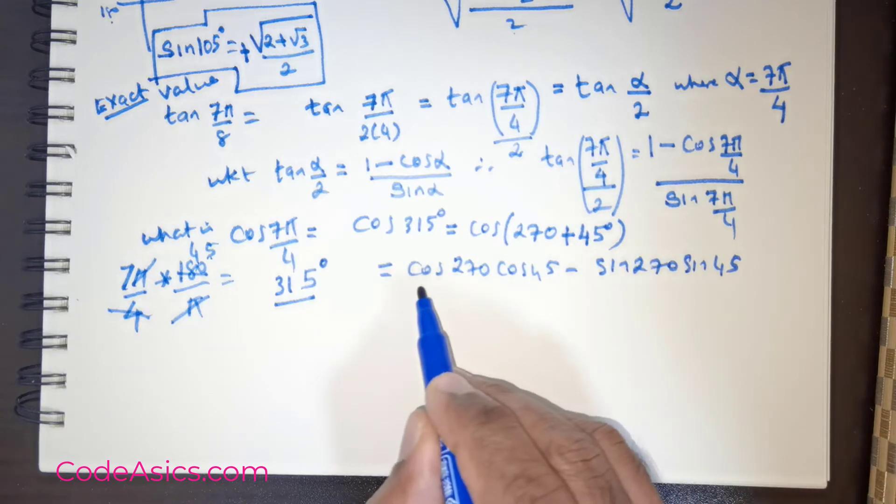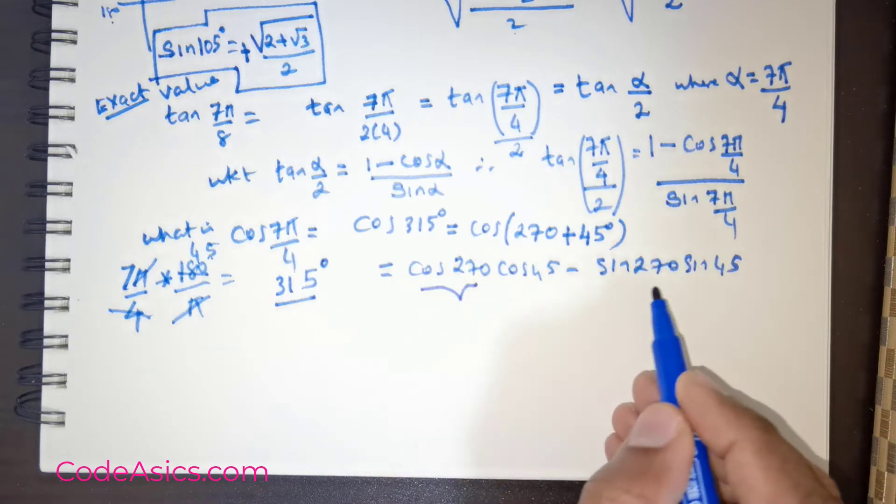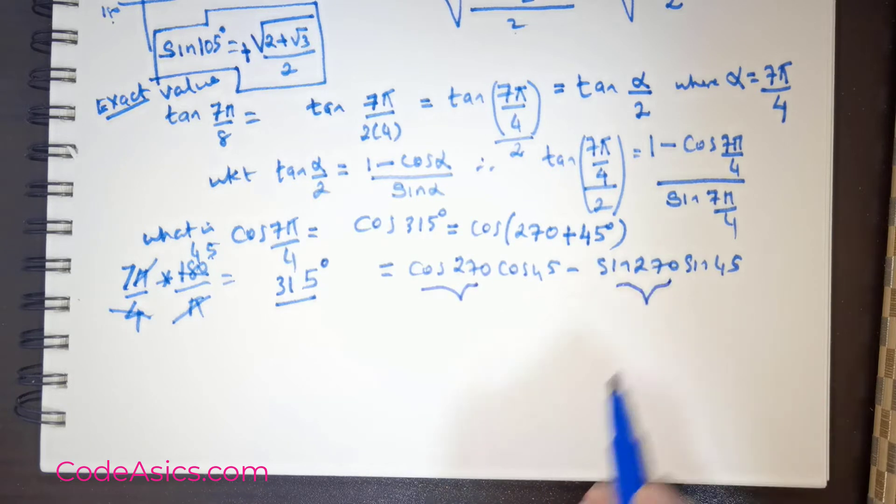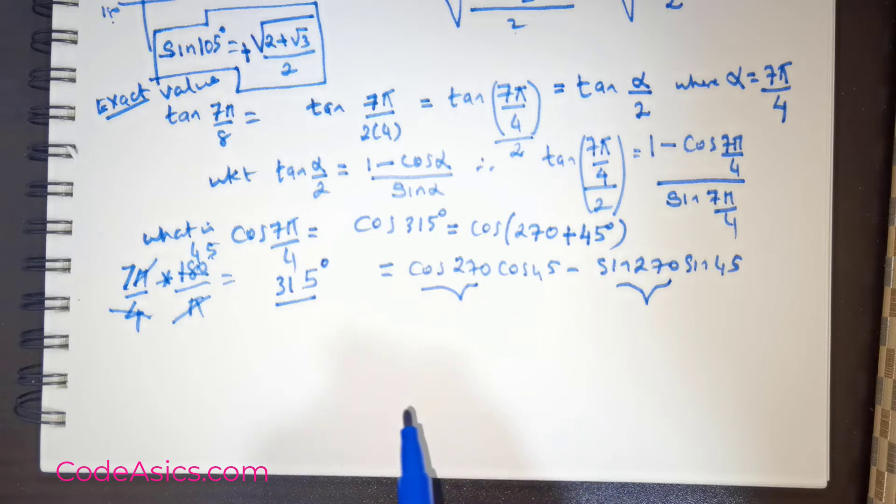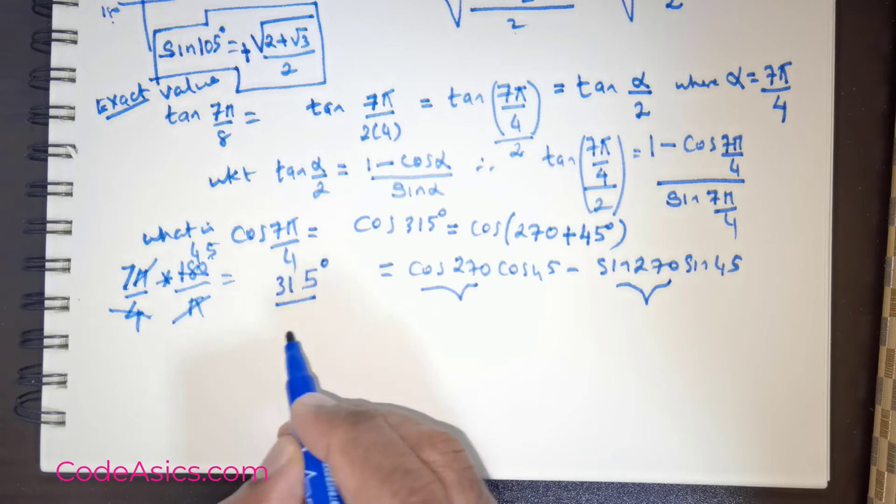Now you have to get the value for cos 270 and sin 270. I do not know what are those values. Of course I know. But for the benefit of the viewers, I need to specify or extract the value for cos 270 and sin 270 so that there is a better level of understanding.